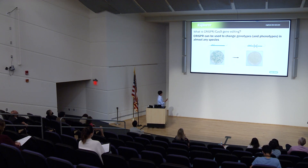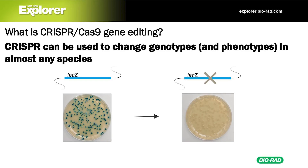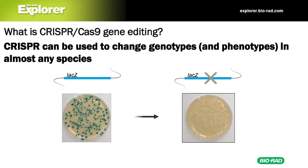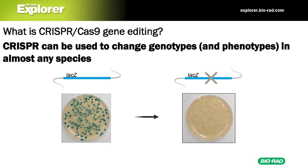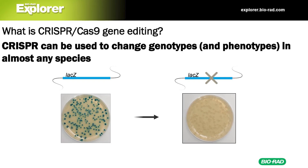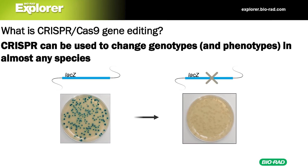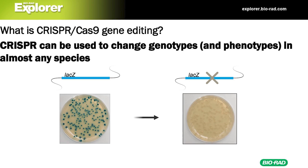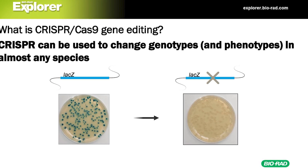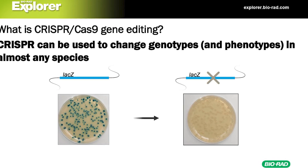As you can see in this diagram, the lac Z species — its wild type allele is blue. But after using CRISPR, we got it to change to white, and we actually got to do this in the lab, which was very fascinating.